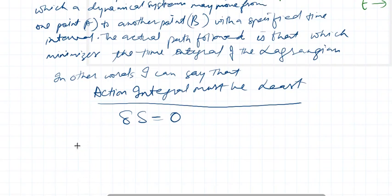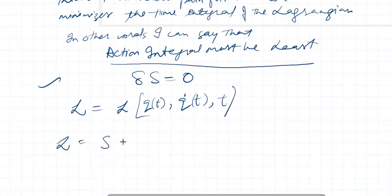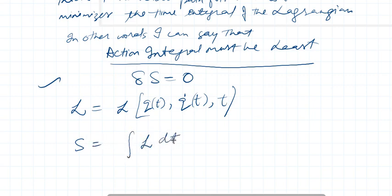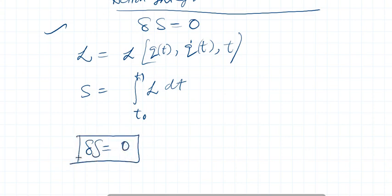Mathematically, the Lagrangian is defined as L(q, q̇, t). The action is defined as the integral of the Lagrangian over a time interval t₀ to t₁. According to Hamilton's principle, the action must be least, so δS = 0.